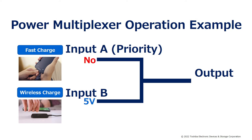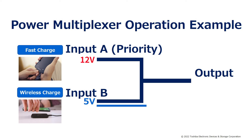Here is an example of the operation of the power multiplexer. If there is no input on the A side and 5 volts of input on the B side, then 5 volts of the B side input is sent to the output. And when the input on the A side becomes 12 volts, priority is given to the A side input and 12 volts is sent to the output.